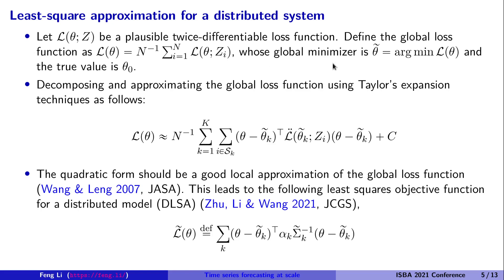We obtain the global optimizer, which we call theta-tilde. Of course, if data is globally distributed, we cannot get the true value of theta because we don't have one big machine. One way to do this is to decompose the global loss function using Taylor expansions so that it is partitioned into small blocks, each being a quadratic form. This quadratic form is a good local approximation for local data, and together they approximate the global loss function — as verified by Wang and Leng in a 2007 JASA paper.